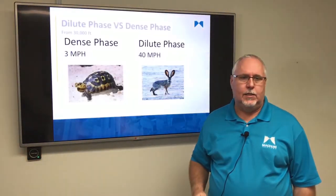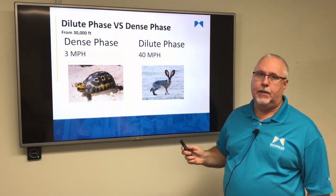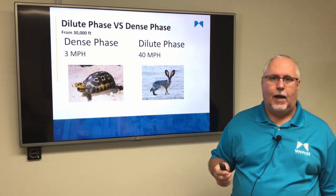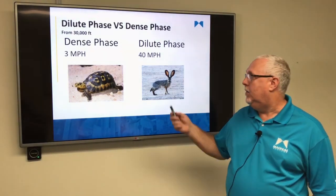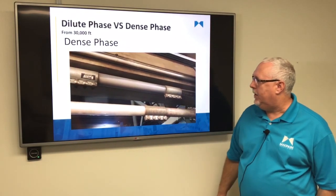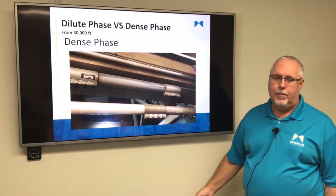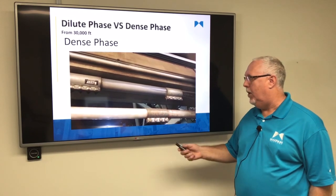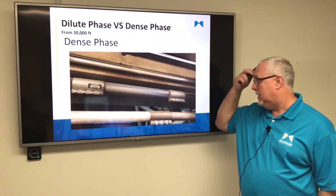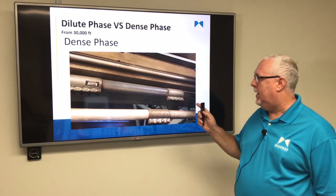Talking a little bit more about the difference between dense and dilute at a high level: in a good dense phase system, the product is moving down the line about three miles an hour — I can walk faster than the product is moving. A dilute phase system, however, runs at about 40 miles an hour on average. Looking at the pipe in a dense phase system, the product is in what they call dune flow mode — a slug goes by, it relaxes a little bit, then another slug goes by. Nothing we can control; it's just how this product likes to run. I can walk to the end of the line and beat that material there.